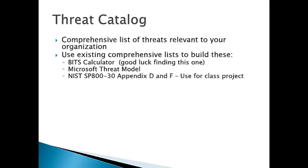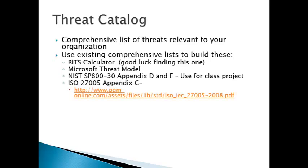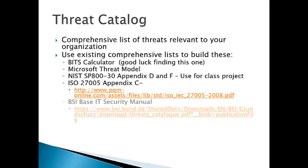NIST SP-830 Appendix D and E — use these for the class project. ISO 27005 Appendix C also has a good list of threats, as well as the BSI Base IT Security Manual, a German-based document. These are all things you can use when developing your threat catalog. They can give you ideas as to what sort of threats to look at, definitions of those threats, and additional information to prioritize and categorize them.